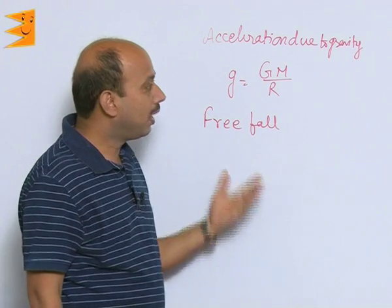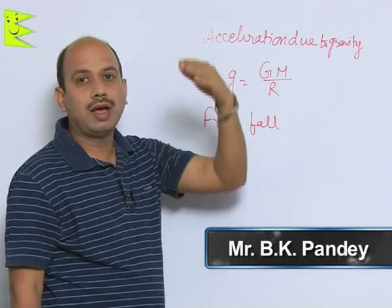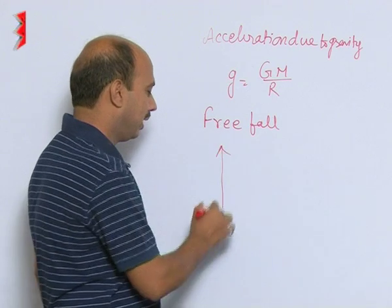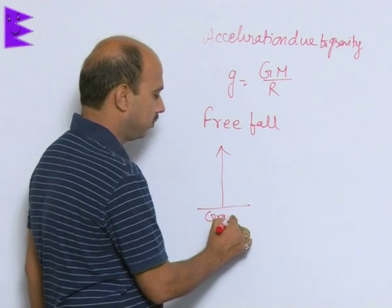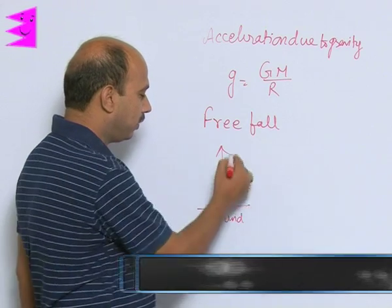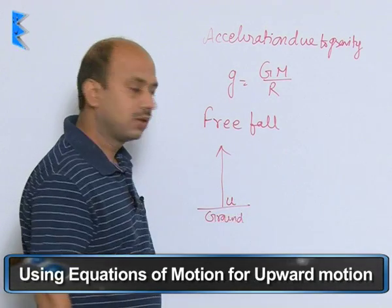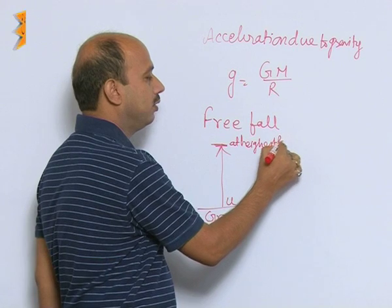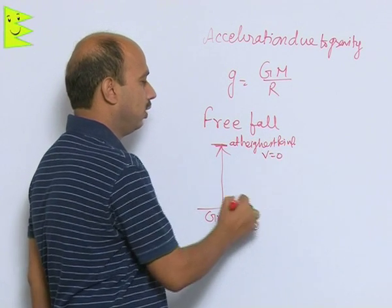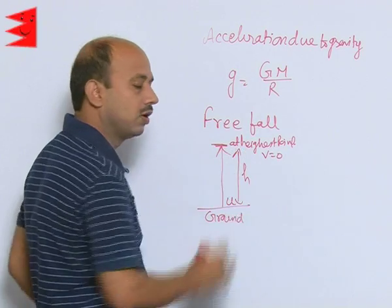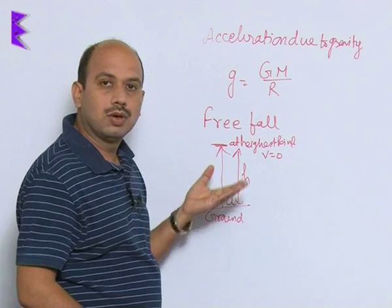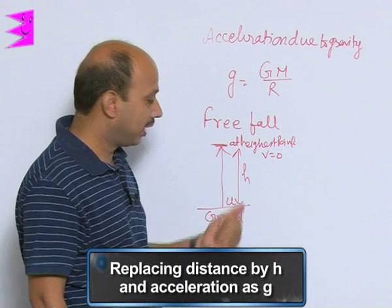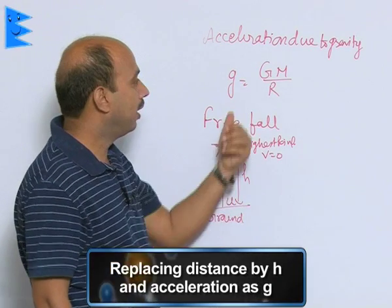We will apply equations of motion for vertically upward and downward motion. Suppose any object is thrown vertically upward — I have taken a ground here. The object is thrown vertically upward with initial velocity u; at the highest point, the final velocity is 0, and this height is h. For vertical motion we can use all three equations of motion, but we have to replace distance s by h and acceleration a by g.